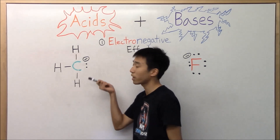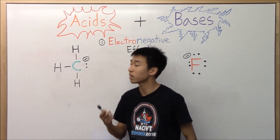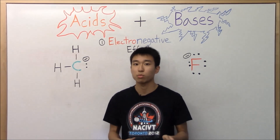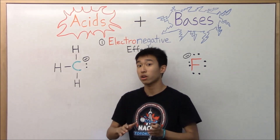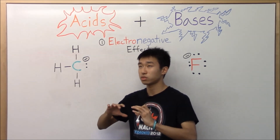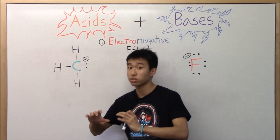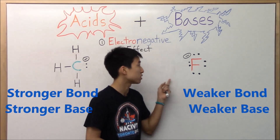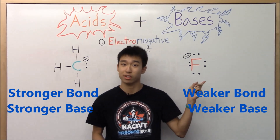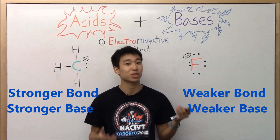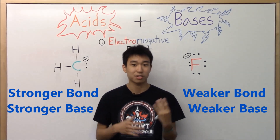But CH3⁻, on the other hand — carbon is less electronegative, more willing to share electrons. So if it's willing to share electrons, you get a stronger bond, versus a greedy atom like fluorine, not willing to share electrons, giving you a very weak bond.